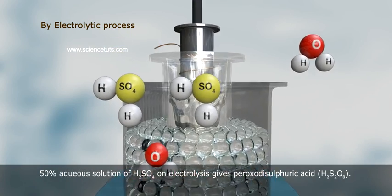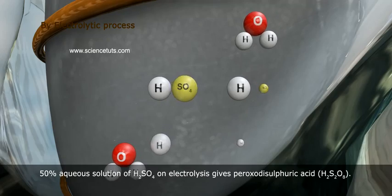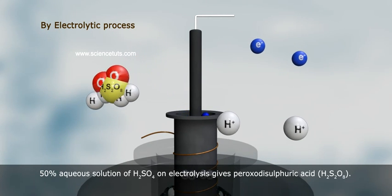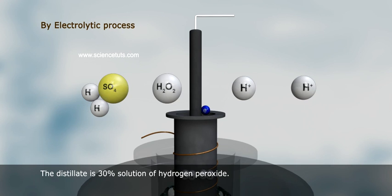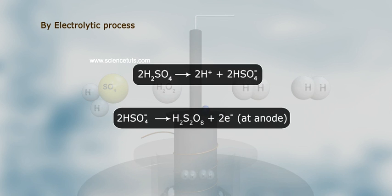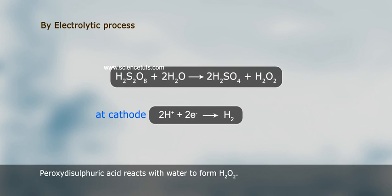In the electrolytic process, a 50% aqueous solution of H₂SO₄ on electrolysis gives peroxydisulfuric acid, H₂S₂O₈. The first product of electrolysis is peroxydisulfuric acid, obtained by the electrolytic oxidation of sulfuric acid: 2HSO₄⁻ gives H₂S₂O₈ + 2e⁻ at the anode.